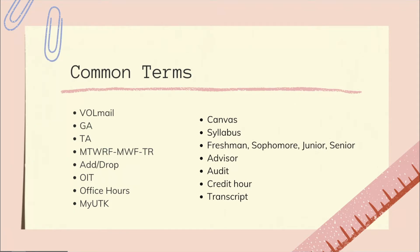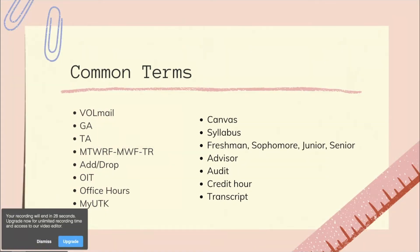Your advisor helps you stay on track to graduate — you'll be assigned one depending on your college and major, and they help you pick which classes to take. Audit means you enroll in a class for no credit: you still pay for the class but do not get a grade or credit. Credit hours are how you get recognition for taking a class, and your transcript is your record of grades, which you can request on MyUTK.